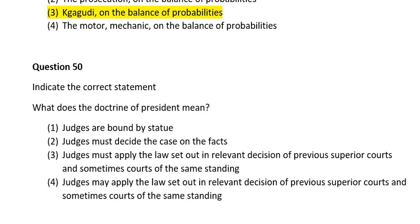Question fifty. Indicate the correct statement. What does the doctrine of stare decisis mean? Number one, judges are bound by this issue; number two, judges must decide to classify the facts; number three, judges must apply the law set out in relevant decisions of previous superior courts and sometimes courts of the same standing; number four, judges may apply the law set out in relevant decisions of previous superior courts and sometimes courts of the same standing. The correct answer is number three.